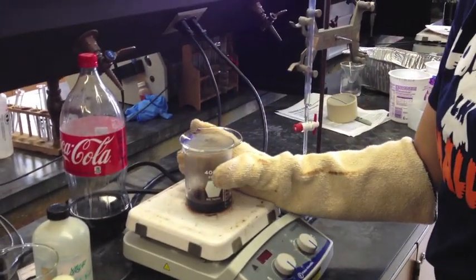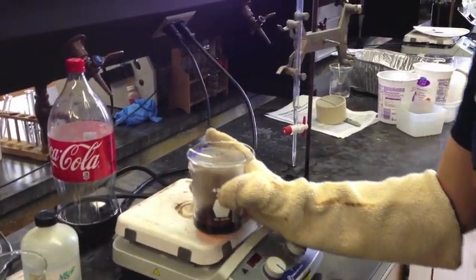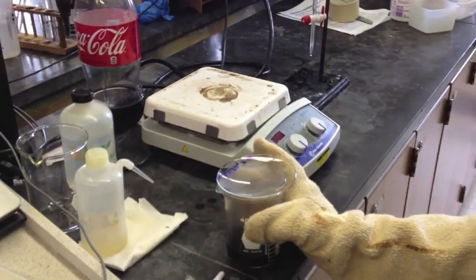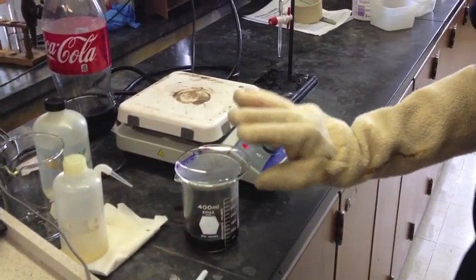Once your Coca-Cola has boiled for 25 minutes, use a heat glove to remove the beaker from the hot plate. Make sure you leave the watch glass on top of the beaker while it's cooling.